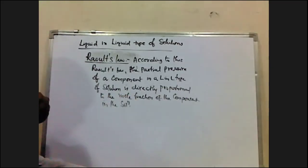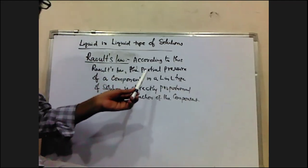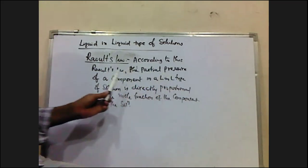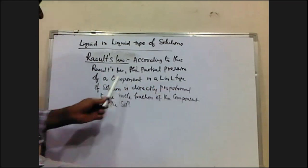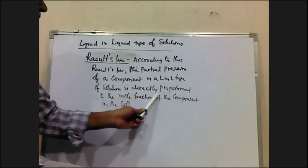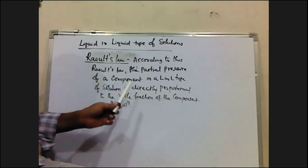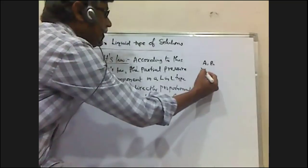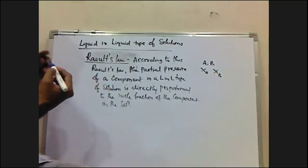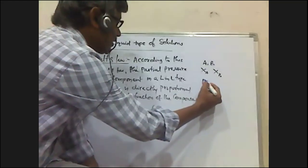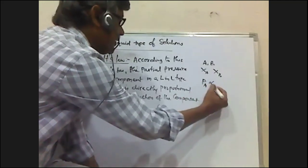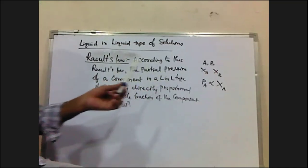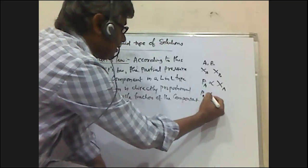According to Raoult's law, the partial pressure of a component in a liquid-in-liquid type of solution is directly proportional to the mole fraction of that component in the solution. For example, if A and B are two liquids, the mole fraction of A is XA and the mole fraction of B is XB. Then PA is directly proportional to XA, and PB is directly proportional to XB.